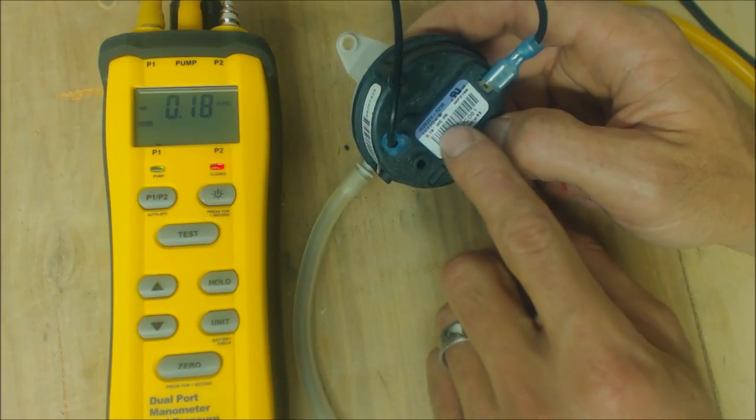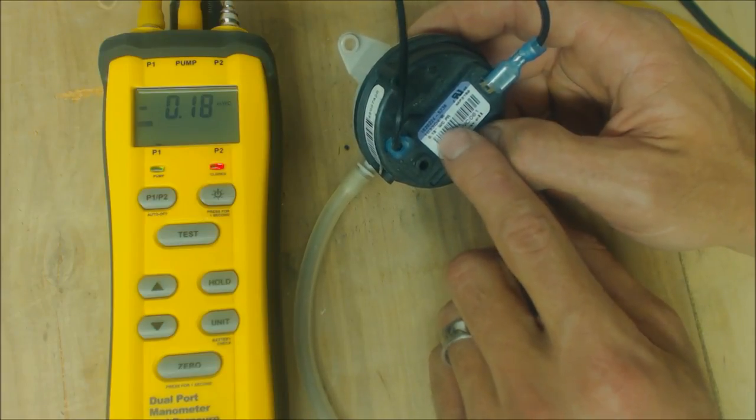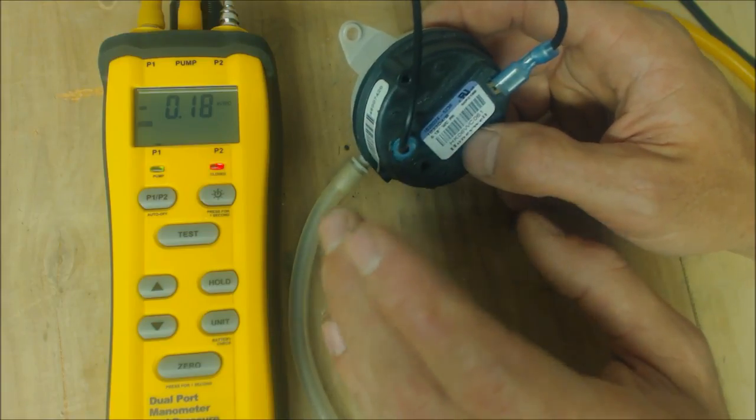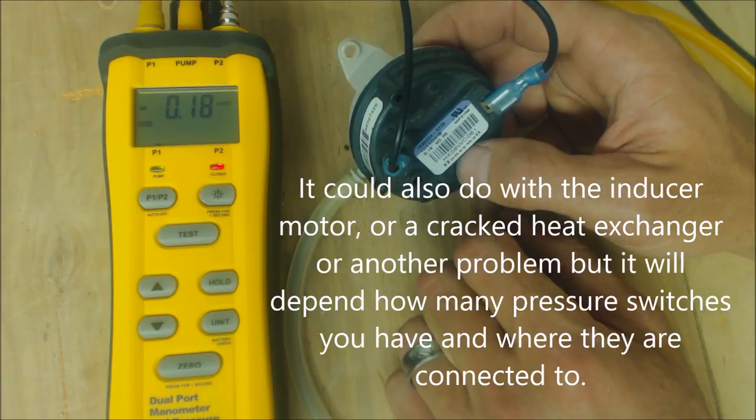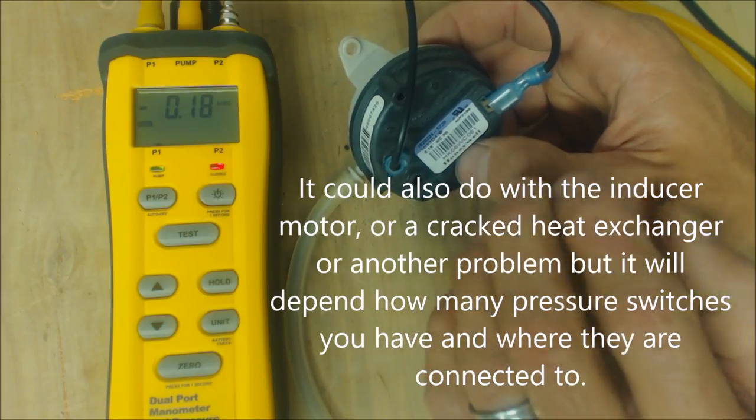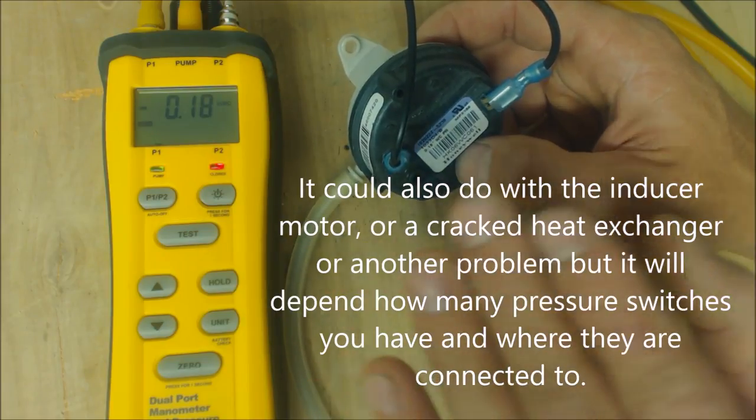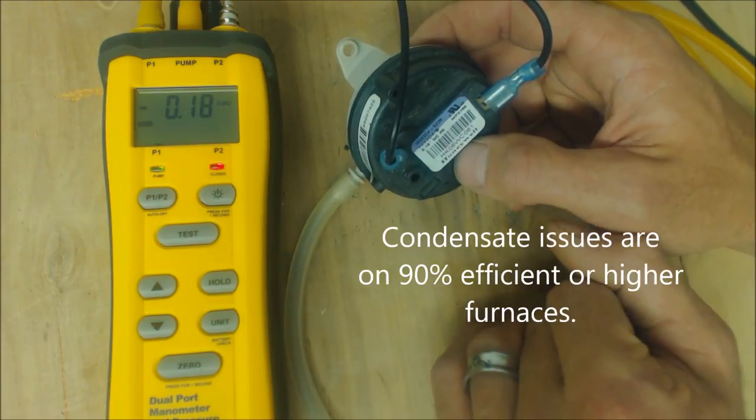It can tell you that the pressure switch is not the problem. Typically intermittent issues with furnace pressure switches have something to do with water, the condensate from the furnace, or maybe the vent pipe is not pitched correctly and there's water filling up in the exhaust pipe.